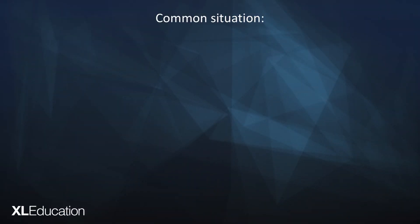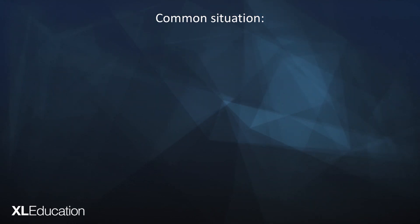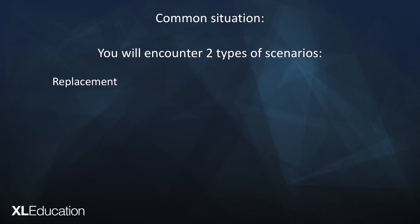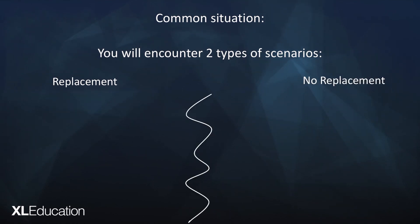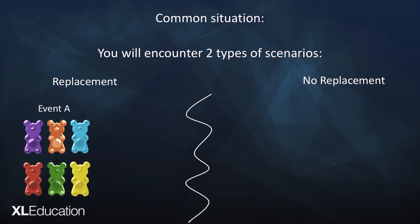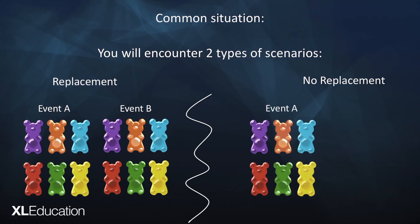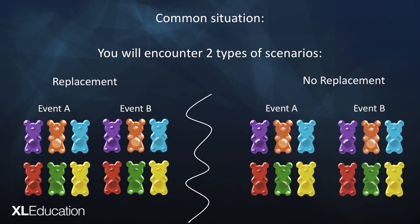The situation you just saw involves two different types of scenarios. The first is one with replacement and the second is one without replacement. A scenario with replacement is one in which the probabilities of event B taking place are the same as those of event A. A scenario without replacement is one in which the probabilities of event B are different from those of event A.